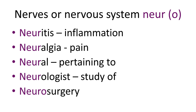An obvious one to start with is 'neuritis'. Neuritis means inflammation of a nerve. For example, in Guillain-Barré syndrome there might be a polyneuritis — a reaction to a virus that can cause a polyneuritis, leading to different areas of paralysis. Neuro: nerve or nervous system. Itis: inflammation of.